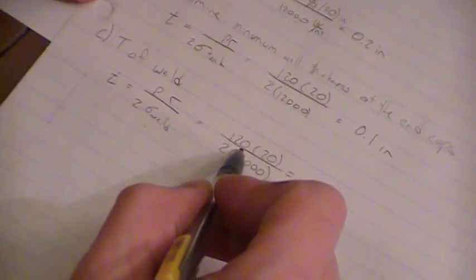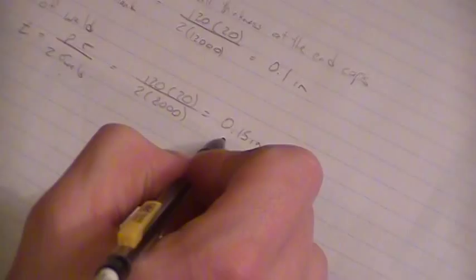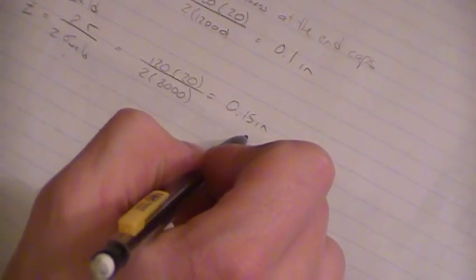So we got 120 times 20 divided by 2 times 8,000 psi. And for the thickness of the weld, we got 0.15 inches.